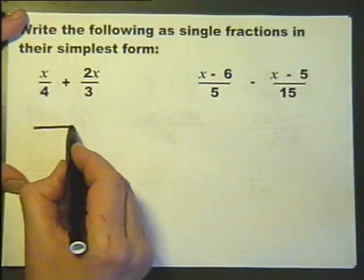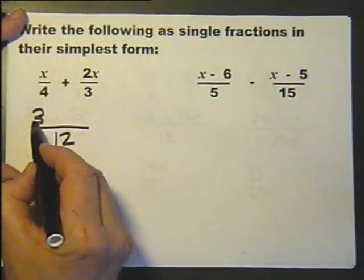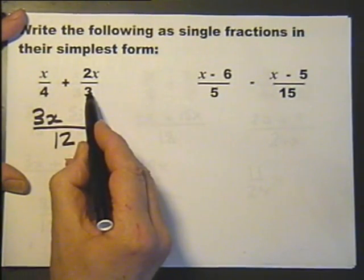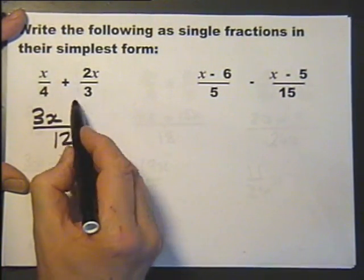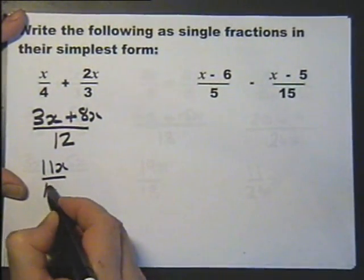Common denominator is 12. 3 times 4 is 12, so 3 times x is 3x. 4 times 3 is 12, so 4 times plus 2x is plus 8x. It's giving me plus 11x over 12.